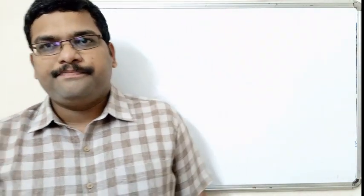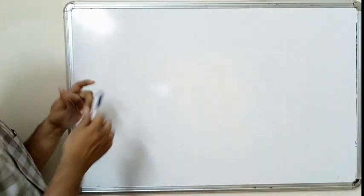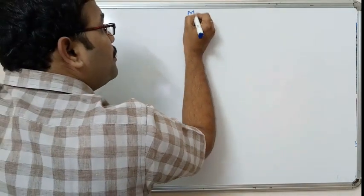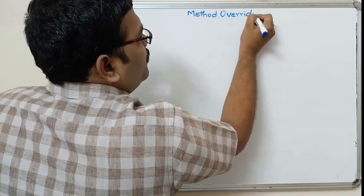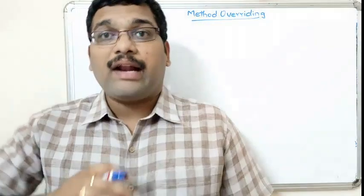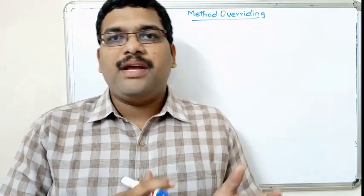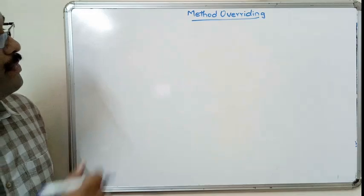Hello friends, welcome back to our channel. In the previous session we have seen the super keyword and its usage in Java. In this session we will see runtime polymorphism, that is method overriding. The name itself indicates method overriding — overriding means writing the same method in a different way.